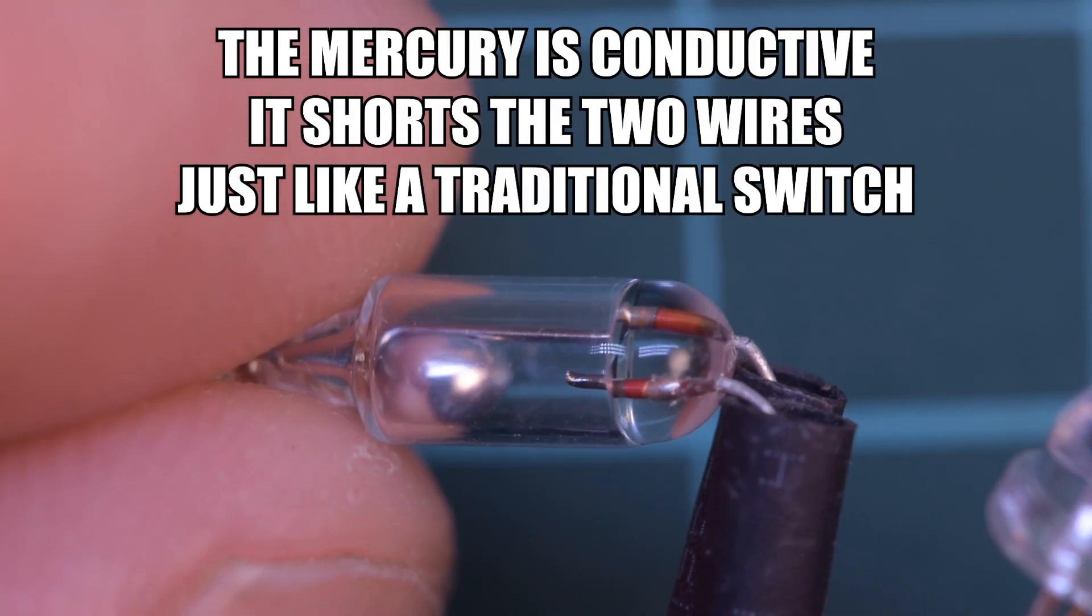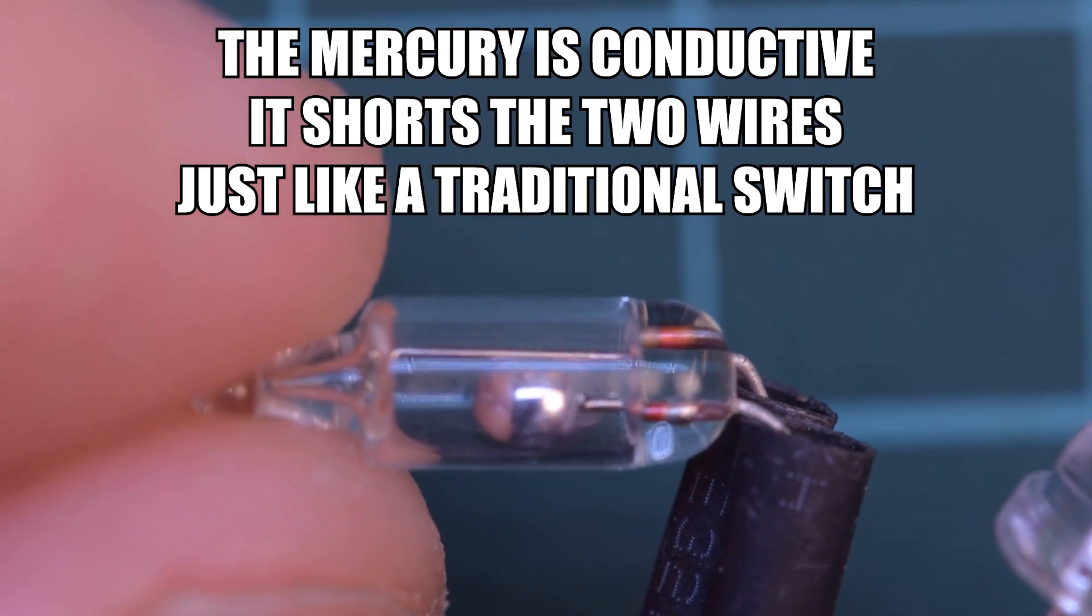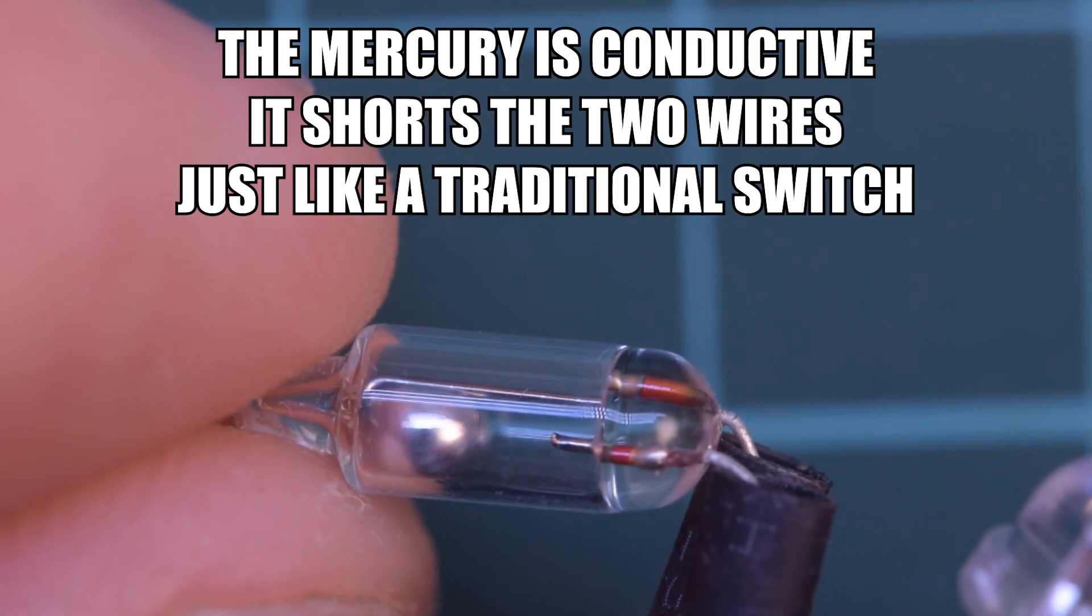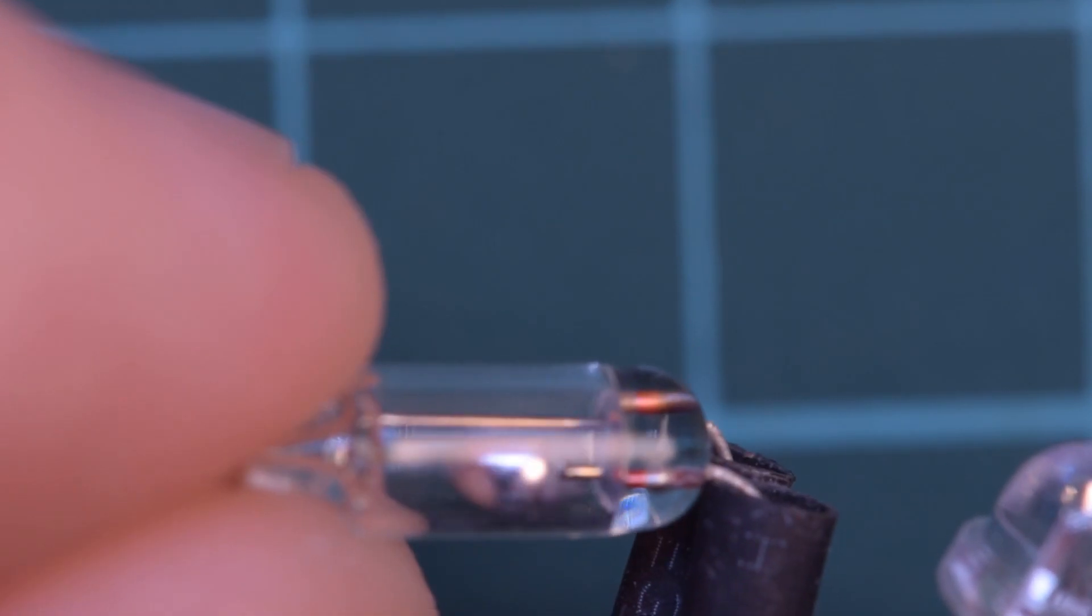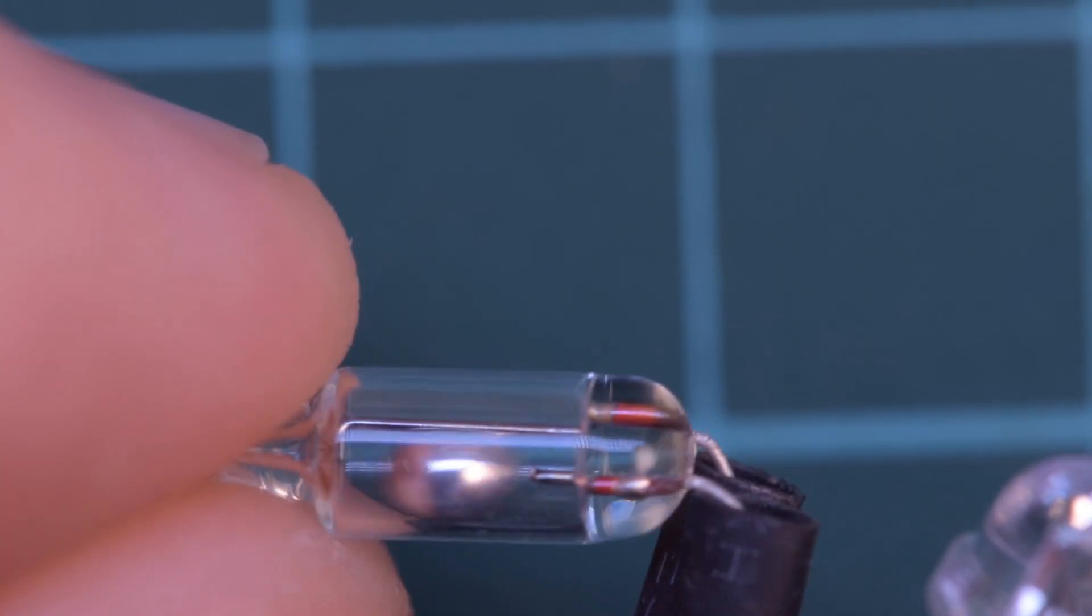This is the same kind of switch they used on old vehicles to control the lights under the hood. So when you open the hood the tilt switch would go into this position and turn on the lights so you can see what's going on under the hood.